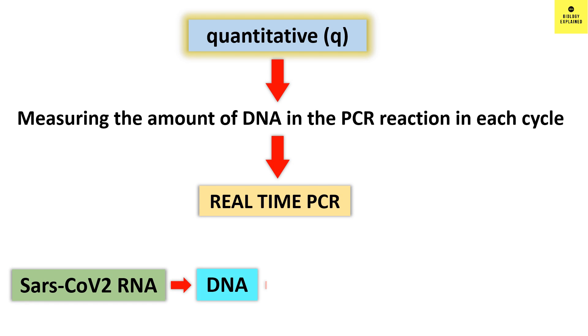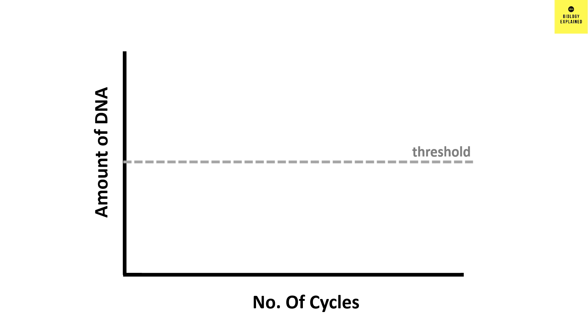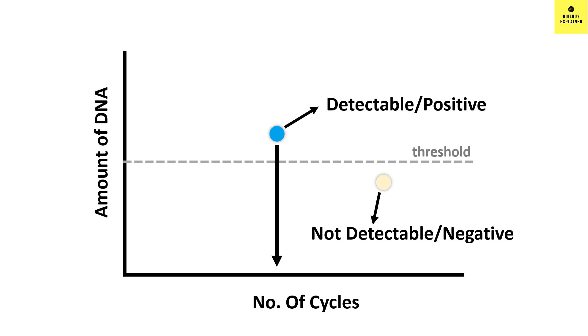First the SARS-CoV-2 RNA is converted to DNA by reverse transcription and then we measure the quantity of this DNA in real-time. Now, a threshold or a limit is kept for each reaction and if the DNA is more than that threshold, then it is detectable or positive and if it is less, then it is non-detectable or negative. And the DNA is measured with the help of a fluorescent dye. Basically, we are measuring at which cycle the fluorescent signal crosses the threshold.